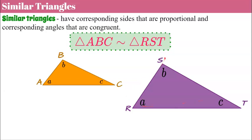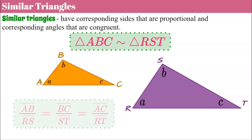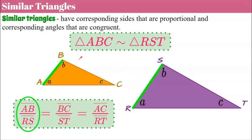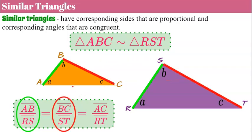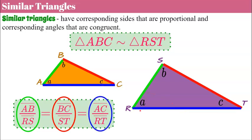Corresponding sides are proportional. Side AB corresponds to side RS, forming a ratio AB to RS. The next one would be BC to ST. Side BC corresponds to side ST. And last but not least, side AC corresponds to side RT. You can write these equivalent ratios to form proportions to find missing side lengths.